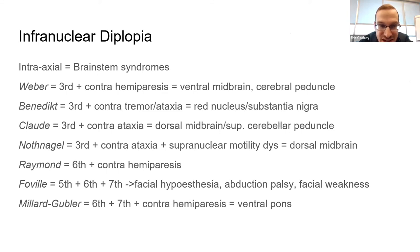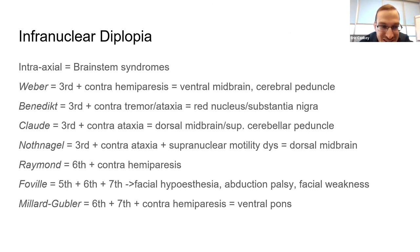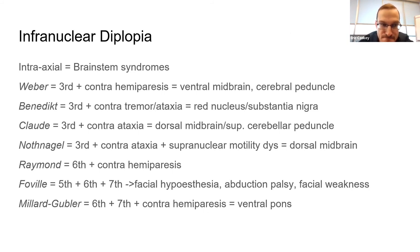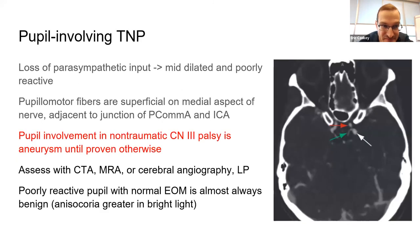There are several brainstem syndromes with eponyms — not going to go through all of them, but this is your chance to look at them and remember a couple of the eponyms, as they still appear on OKAPS. Palsies involving the third nerve are the scary ones.